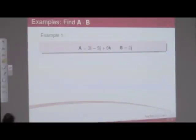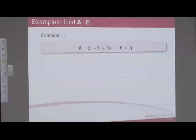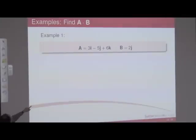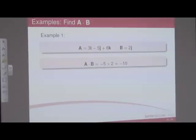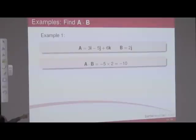Here's a little example. I've got A equals 3i minus 5j plus 6k and B equals 2j. What's A dot B? We group the coefficients together. Because B is effectively 0i and 0k, we only have a value for j, so we can disregard the i and k from A. So we have minus 5 times 2, which gives you minus 10 — that's A dot B.